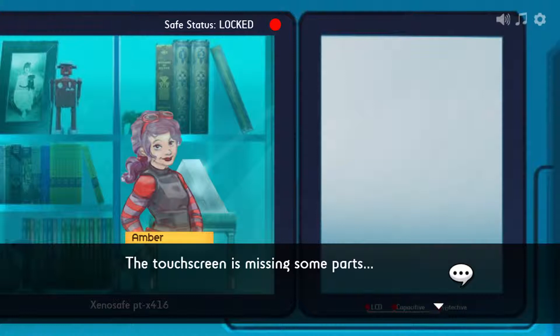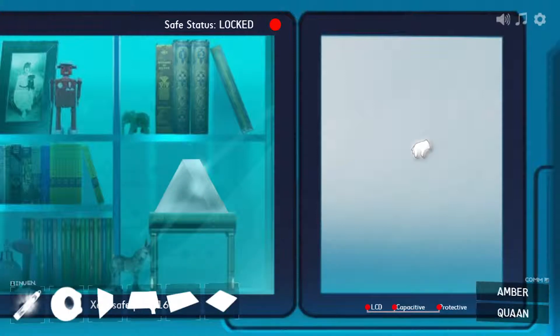There are two parts to this puzzle. First, you have to assemble the upper layers of a touchscreen in the right order to make it work. Then you have to work out the code to unlock the screen.